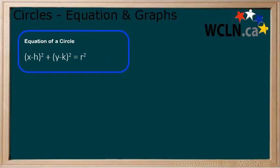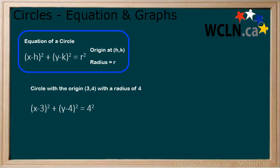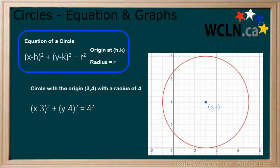Here is the general equation for circles not centred at the origin. h and k represent the location of the origin. Therefore, a circle with an origin at the point (3,4) and a radius of 4 would have the following equation. When we graph it, we see that the centre is located at x equals 3 and y equals 4 and that it has a radius of 4.